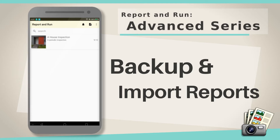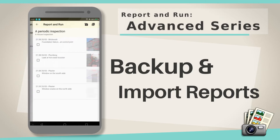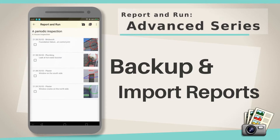Go to Report Page. This is the page that shows the list of images. Tap on the Overflow menu in the top right of your screen. Tap on Export JREP from this drop-down menu.